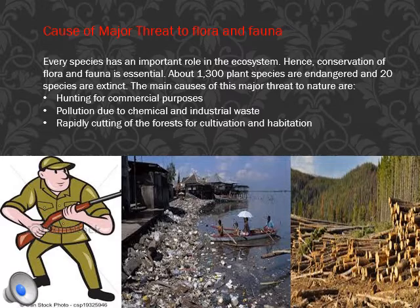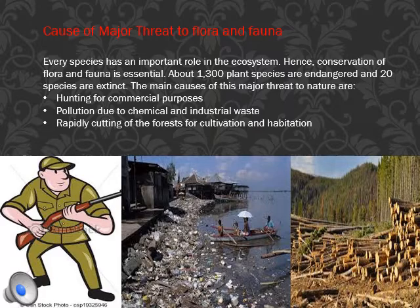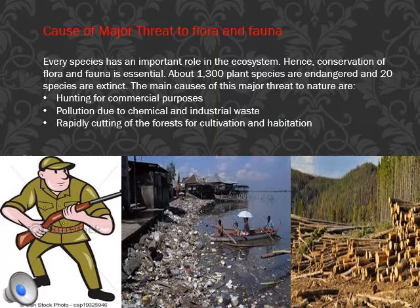Now let's see the major threats to flora and fauna caused by human beings. Every species has an important role in the ecosystem, so conservation is very essential. Excessive exploitation of plants and animals has disturbed the ecosystem — about 13,000 plants are endangered and 20 species are extinct. The major threats include hunting for commercial purposes, pollution due to chemical and industrial waste, and cutting of forests to bring land under cultivation.